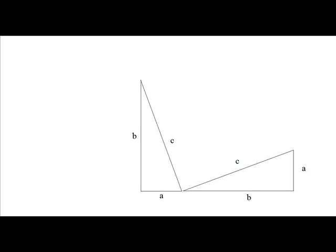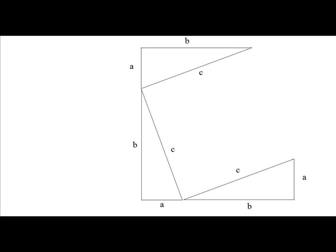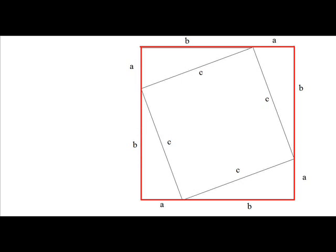Next to this triangle, let's draw a similar triangle with the same hypotenuse length, same base length, and same height length, and place it standing on its end. Then at the top of this triangle, let's place another triangle of the same dimensions, and to the right of that let's place another triangle of the same dimensions. What you wind up with is a large square surrounding a smaller square that's tipped on its side.